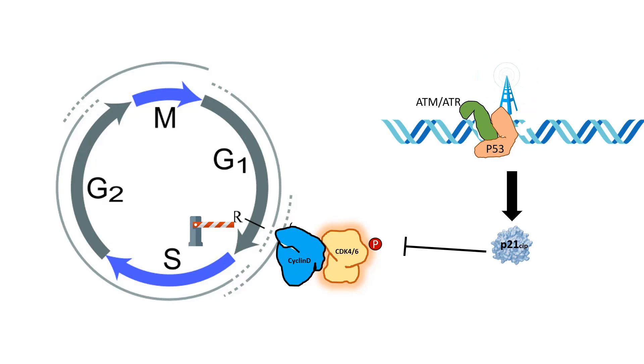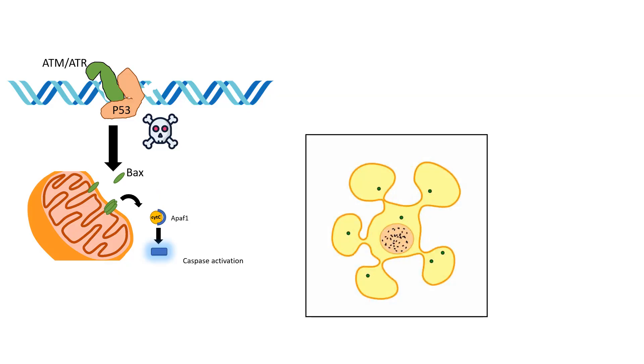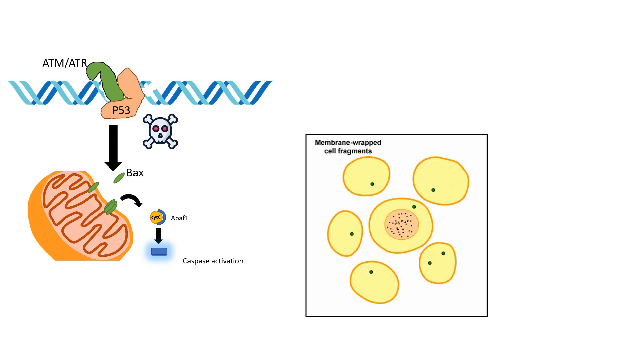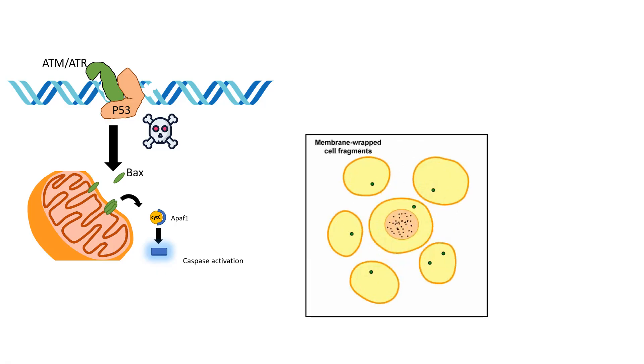If the error is corrected, then the cell cycle progression resumes. Now let's say the damage is irreversible. Then this P53 gives rise to BAX. BAX is a protein that forms pores in the mitochondrial membrane, and as a result, cytochrome C comes out in the cytoplasm, which interacts with other components like APAF1 and gives rise to caspase activation. Caspase activation can ultimately lead to the apoptosis of the cell. If the DNA damage is repairable, then the cell pauses and gives the cell enough time to repair the damage. If the damage is irreversible, it decides to kill it in a programmed fashion. This is how the G1 checkpoint works.